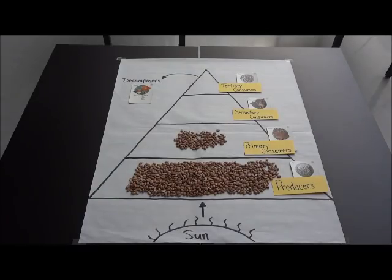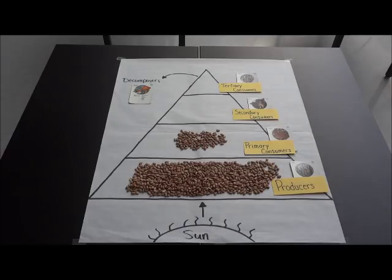Now we know that secondary consumers will eat primary consumers, meaning the energy from the primary consumers will be transferred to the secondary consumers. Since 10% of energy is transferred from one level to the next, I am going to move 10 pinto beans up to our secondary consumer level. I have now moved 10 pinto beans from our primary consumer level to our secondary consumer level of our energy pyramid.